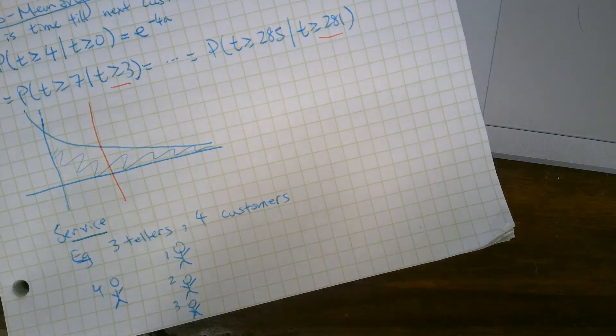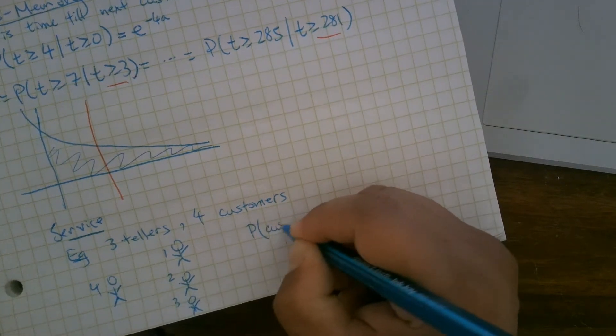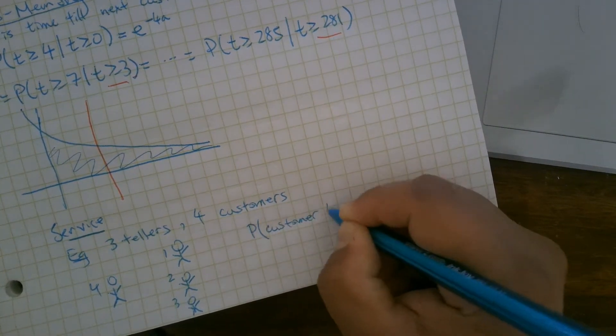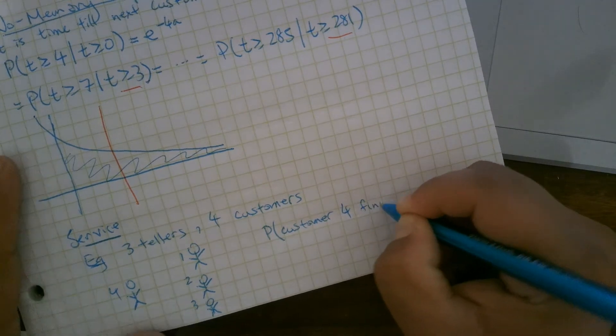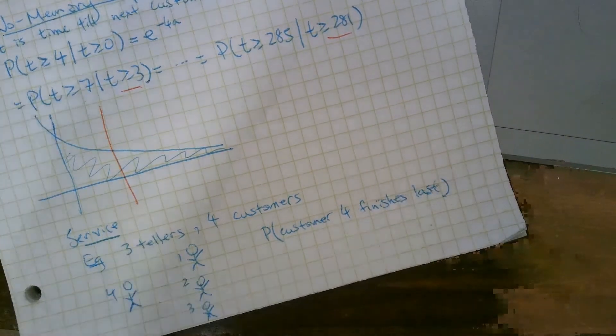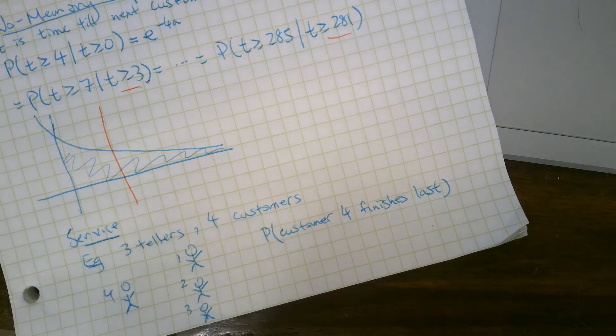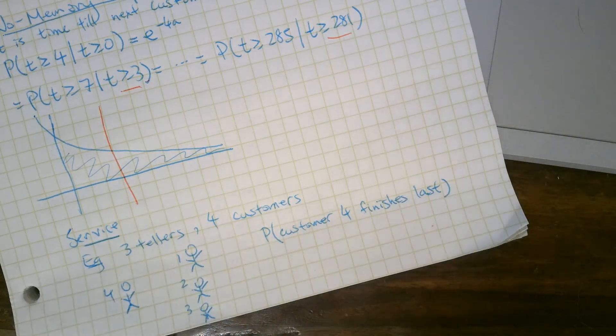Okay, and we want to calculate the probability that customer four finishes last. It's a probability that all the rest of the people get served and get out before customer four does. And it seems like it might be high, right? Because these guys are already being serviced.